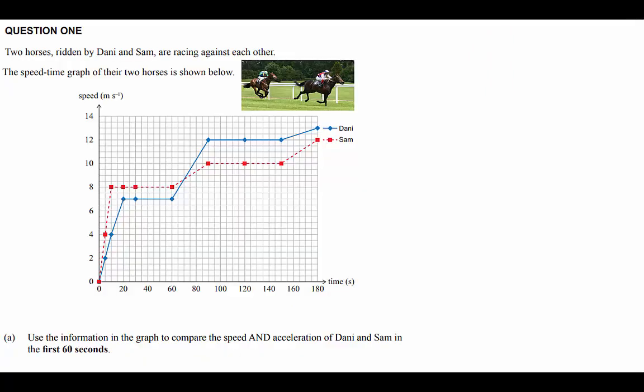So in question one we're looking at a situation between two riders and their horses competing in a race. We're asked to compare the speed and acceleration of Danny and Sam in the first 60 seconds.